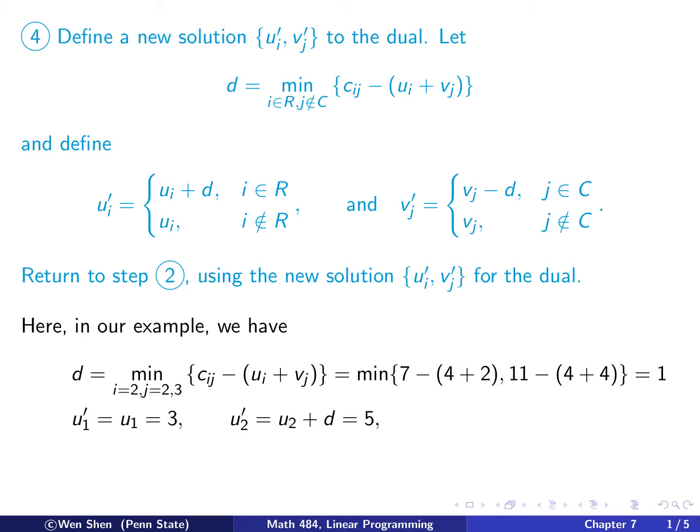And then I will use that to update my u's. So u_1 prime, it is simply u_1, this is unchanged. And u_2 prime, 2 is in R, so I will add d on top. So it becomes 4 plus 1, which is 5.